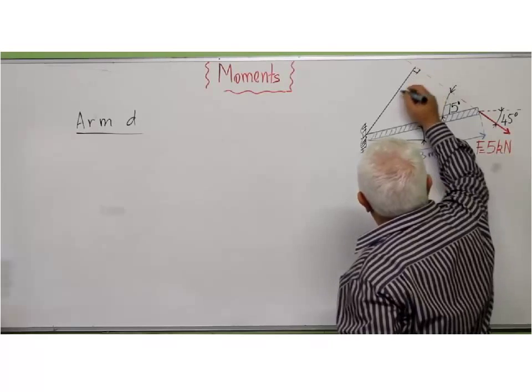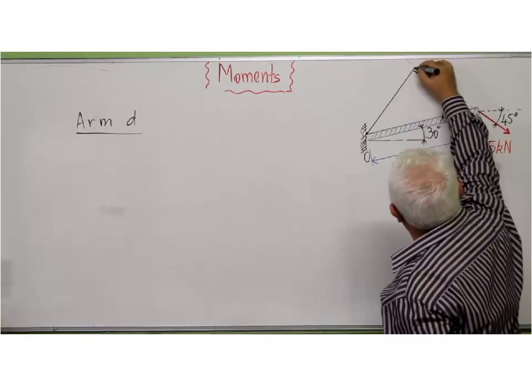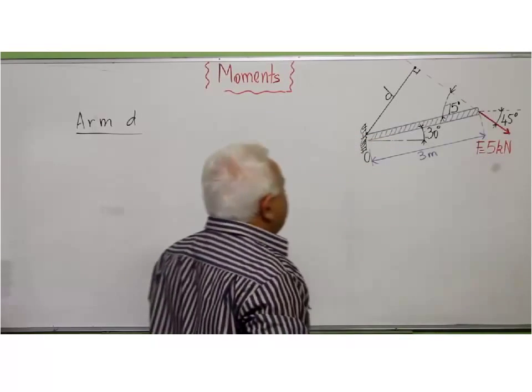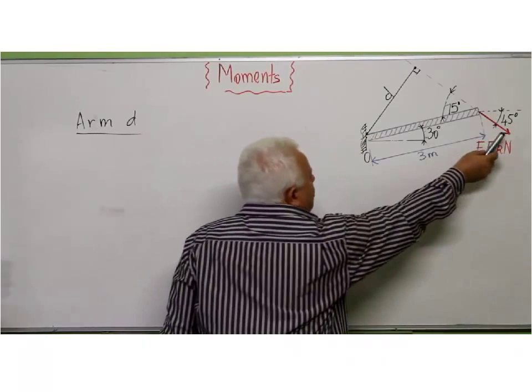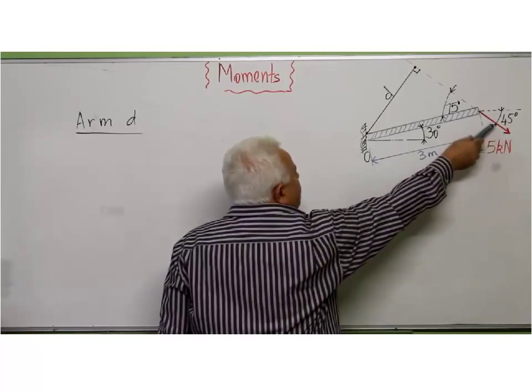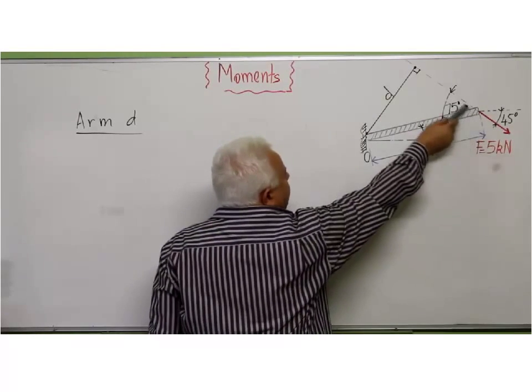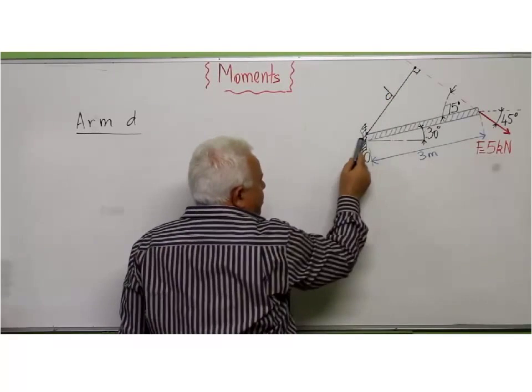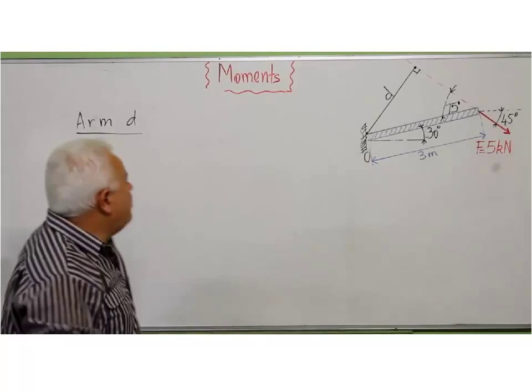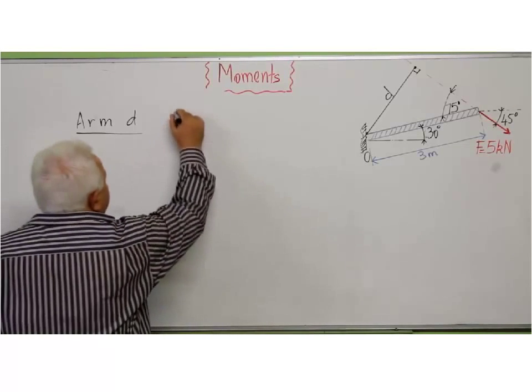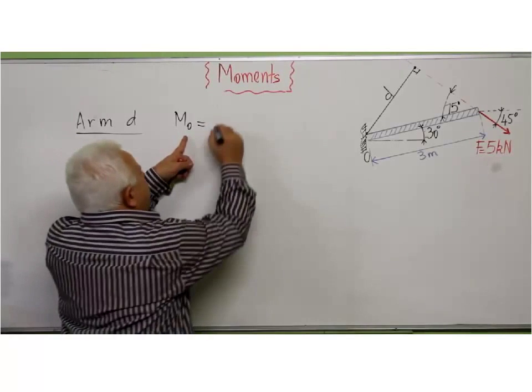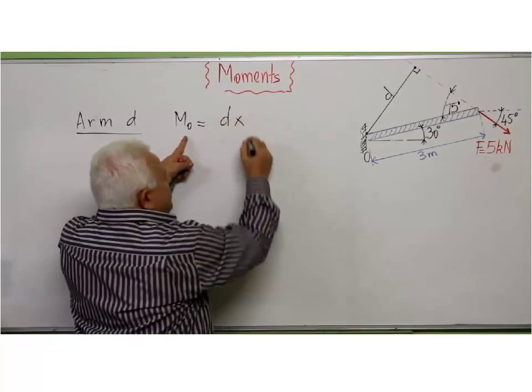This perpendicular distance we call the arm D. Now how to find it? We launch the line of action of the force and we draw the perpendicular to the point where we want to calculate the moment. So the moment about O is D times the force.